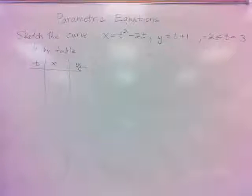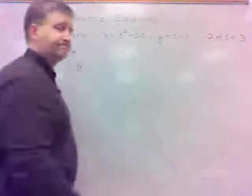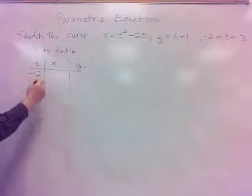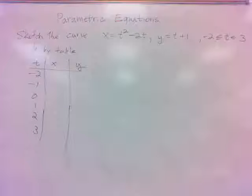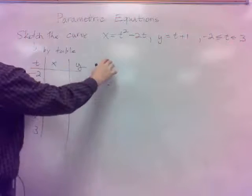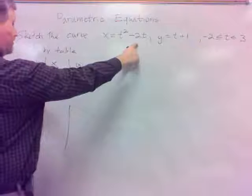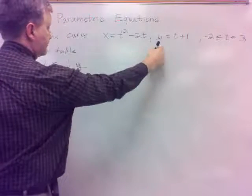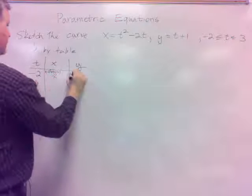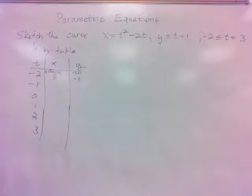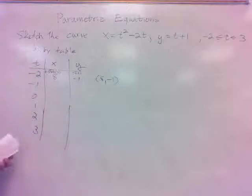One way we can do this to sketch the curve by a table is, just like we did tables before, except our x's and y's are defined in terms of t. So in our table, we're going to use t values. In this case, we're going from negative 2 to 3. How about we do negative 2 to 3 integers? Then you just plug it in, get the x, get the y.